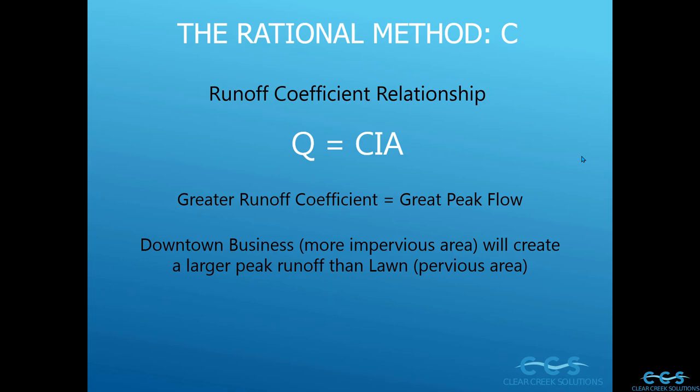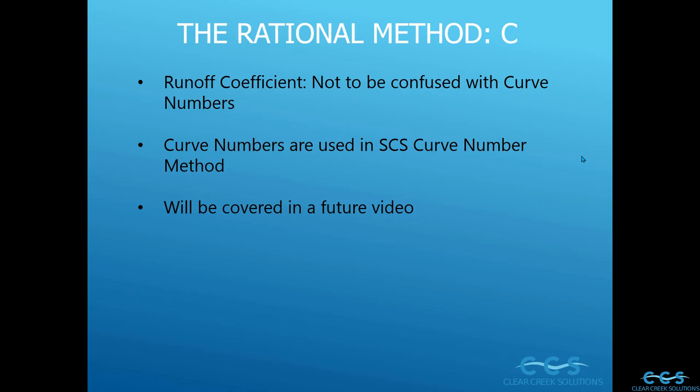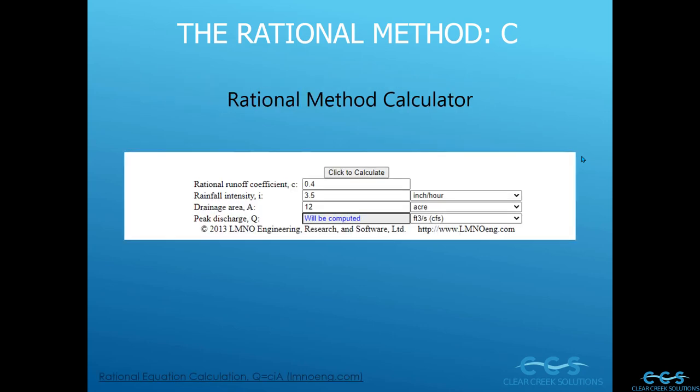Looking at the relationship Q equals CIA — the greater the C value, the greater the peak flow. A downtown business with more impervious area will create larger peak runoff than lawn, forest, or natural soil where water infiltrates and doesn't flow as quickly. Water dumped on concrete runs off immediately, giving a greater runoff coefficient and therefore a greater Q. Keep in mind: the runoff coefficient C is not to be confused with curve numbers from the SCS curve number method, which uses a different set of equations — I will cover that in a separate video.